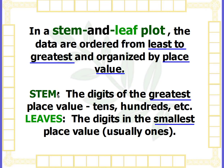Your stem is going to be the digits of the greatest place value, like the tens, the hundreds, etc. Your leaves are the digits in the smallest place value — they're usually the ones, but sometimes you might have data that has decimals, like maybe to the tenths. So then the tenths place would be your leaves and the ones would be your stem.